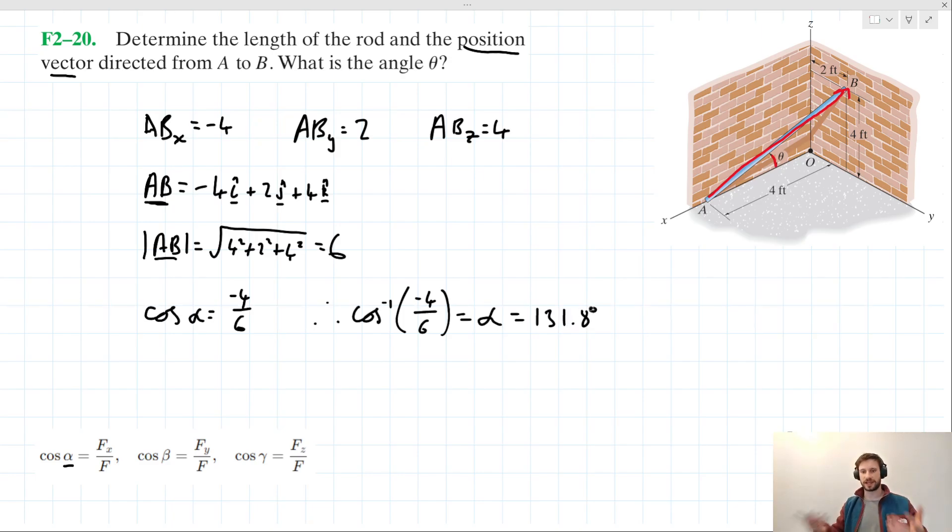Now you might take this value at 131.8 and you might think it's a bit of a surprise. Since when we look at the diagram, that does not look like an obtuse angle, which 131.8 is. It looks like an acute angle that's smaller than 90 degrees.